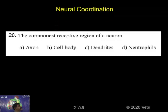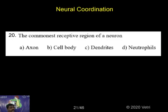The Common Receptive Regions of Neurons. The options are: Axon, Cell Body, Dendrites, or Neutrophil. Dendrites is the correct answer. It acts on Cell Body and Dendrites. The Common Receptive Regions of Neurons — the answer is Dendrites.